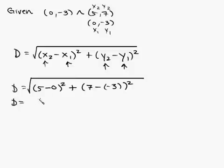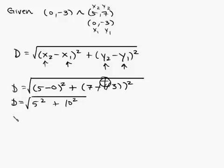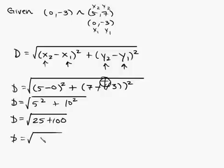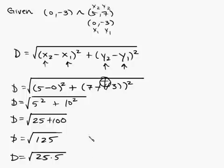So d equals the square root of 5 squared plus — the double negative makes it positive — 7 plus 3, which is 10 squared. That gives us the square root of 25 plus 100, which is the square root of 125. Breaking that up as 25 times 5, d equals 5 root 5.